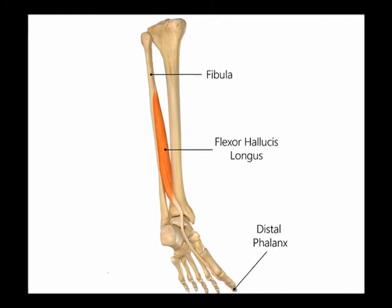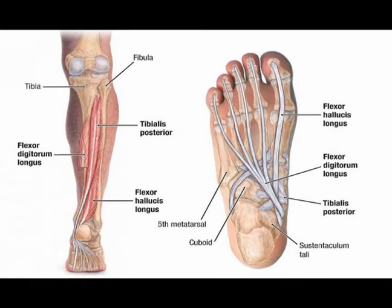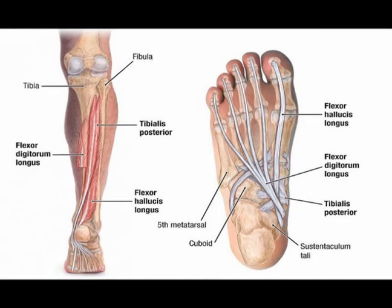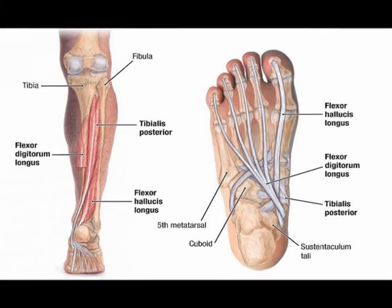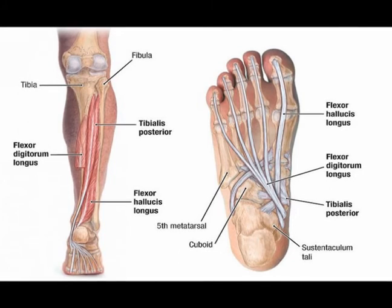Now it seems a little unusual that the origin of a muscle that flexes the great toe is located on the lateral aspect of the lower leg. But it is, and that's something that a lot of people get confused about. The origin of the flexor hallucis longus muscle is on the posterior aspect of the fibula bone, which is the long slender bone located on the lateral part of the lower leg.